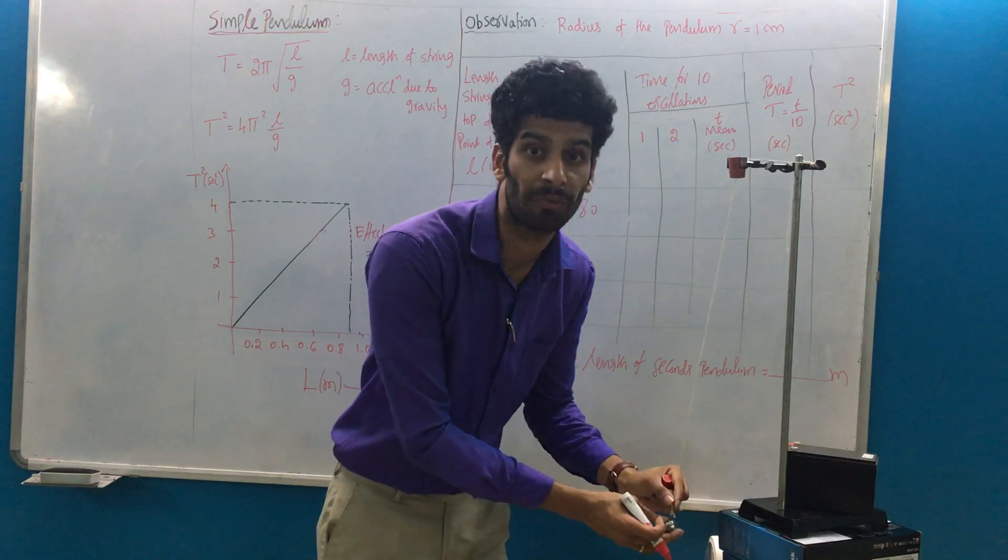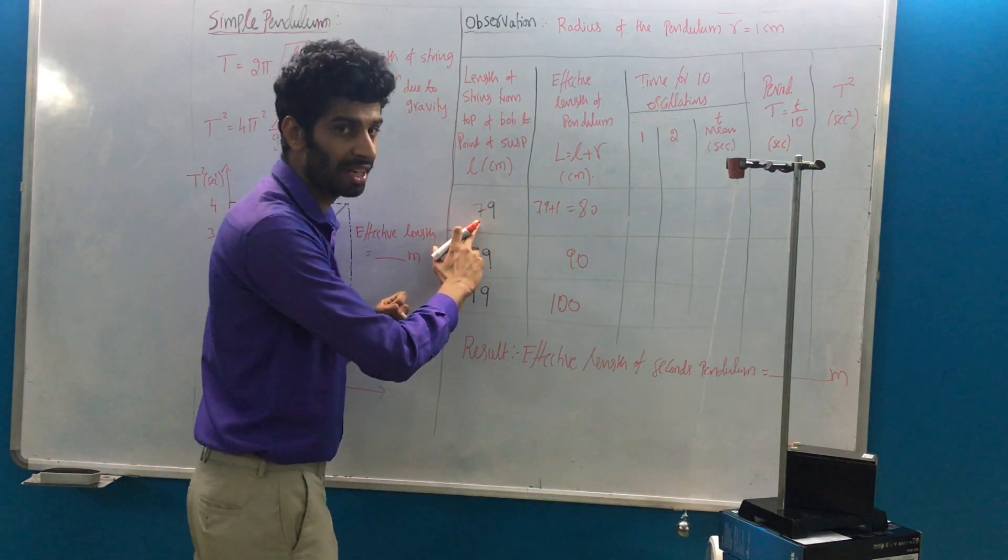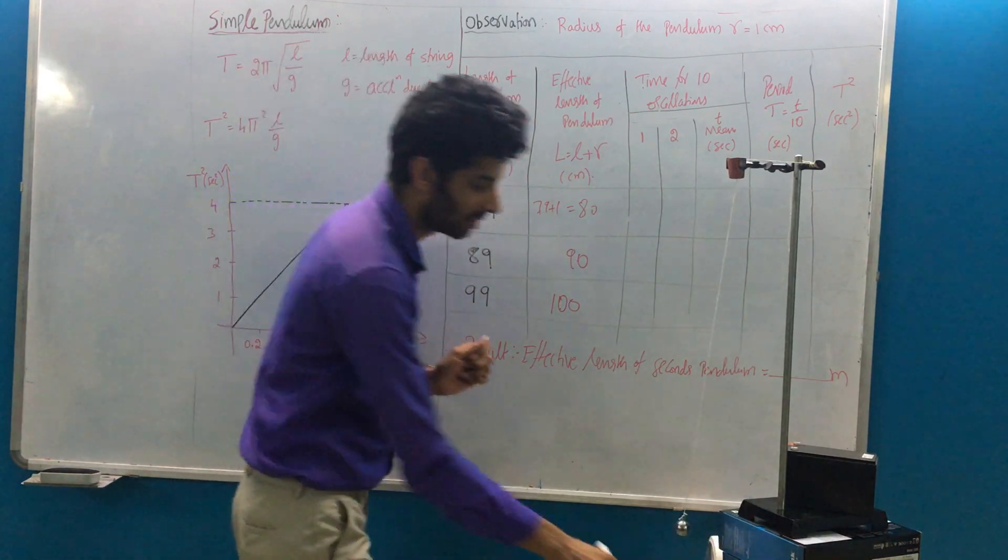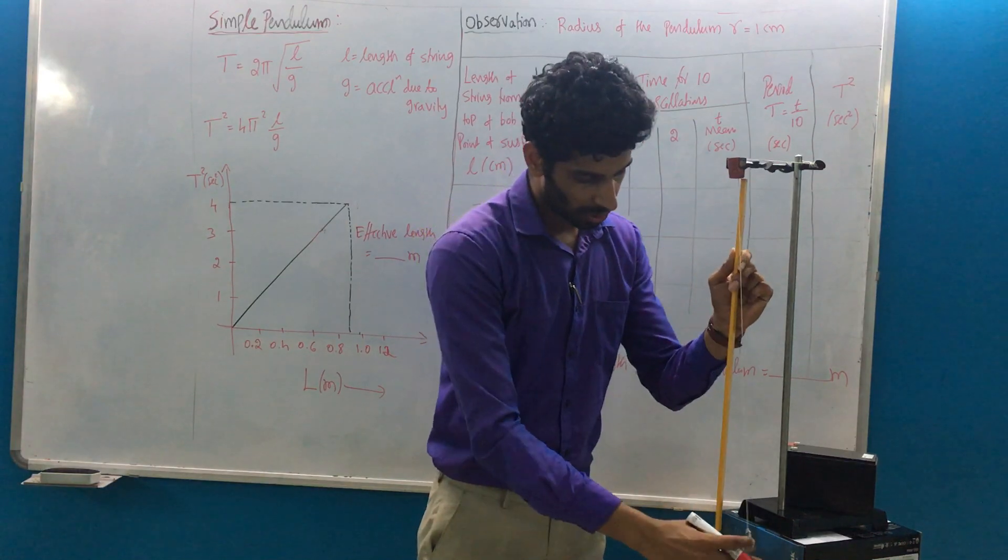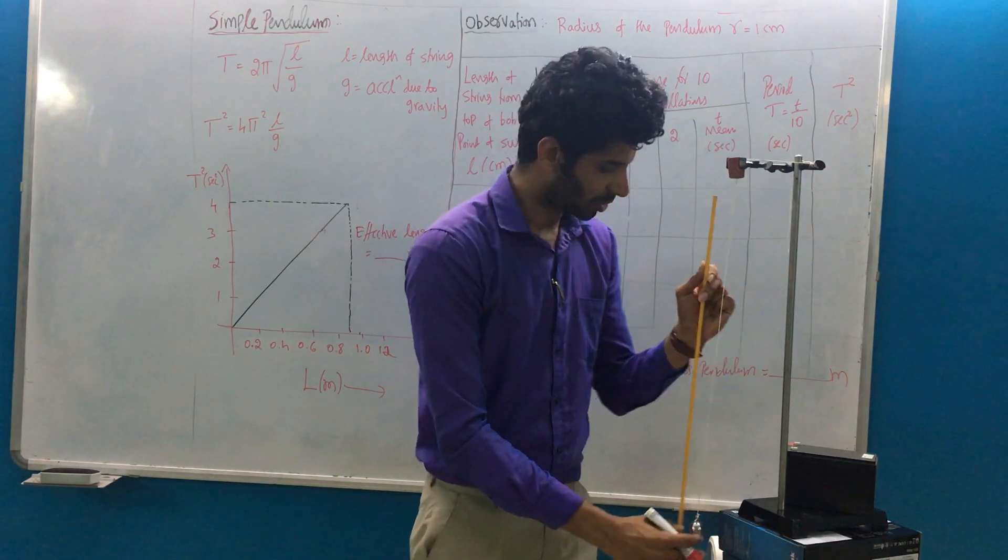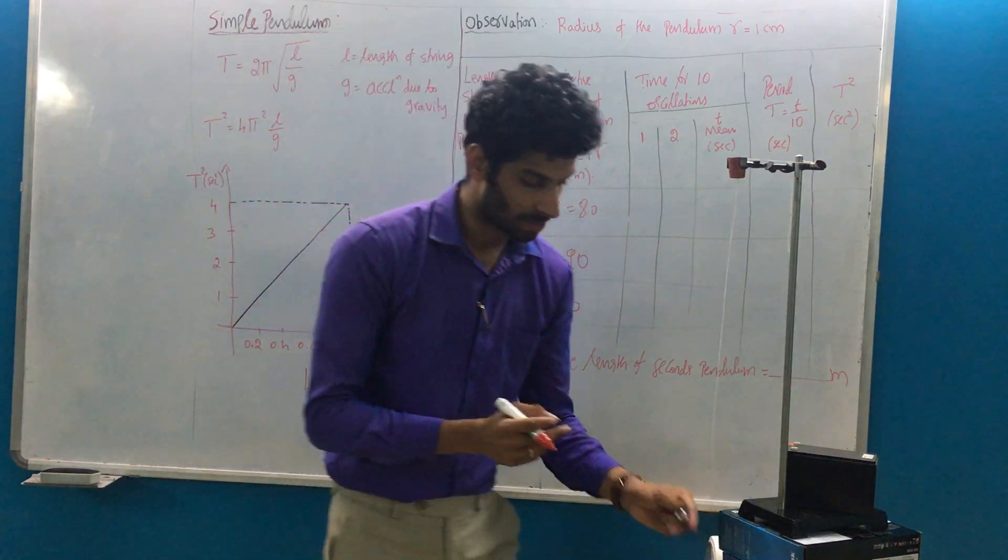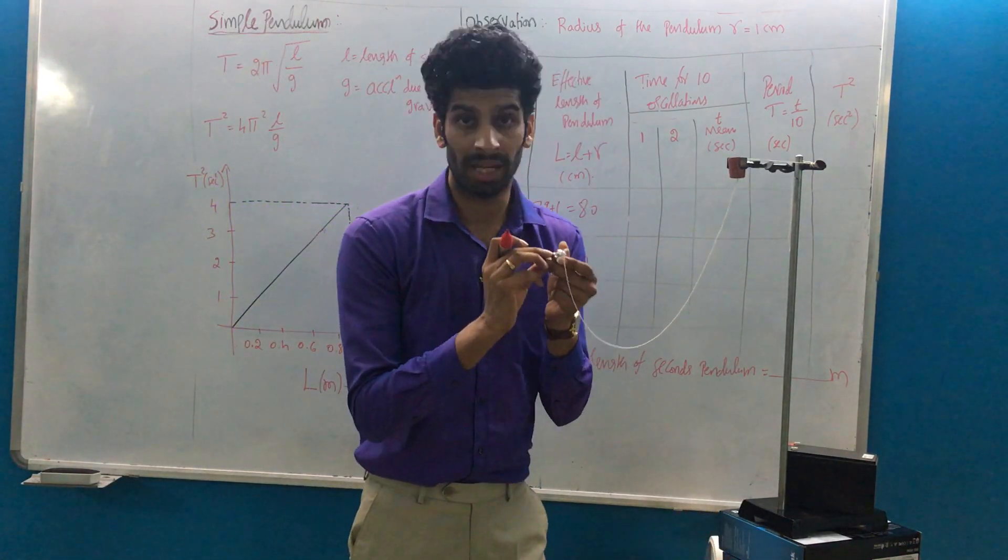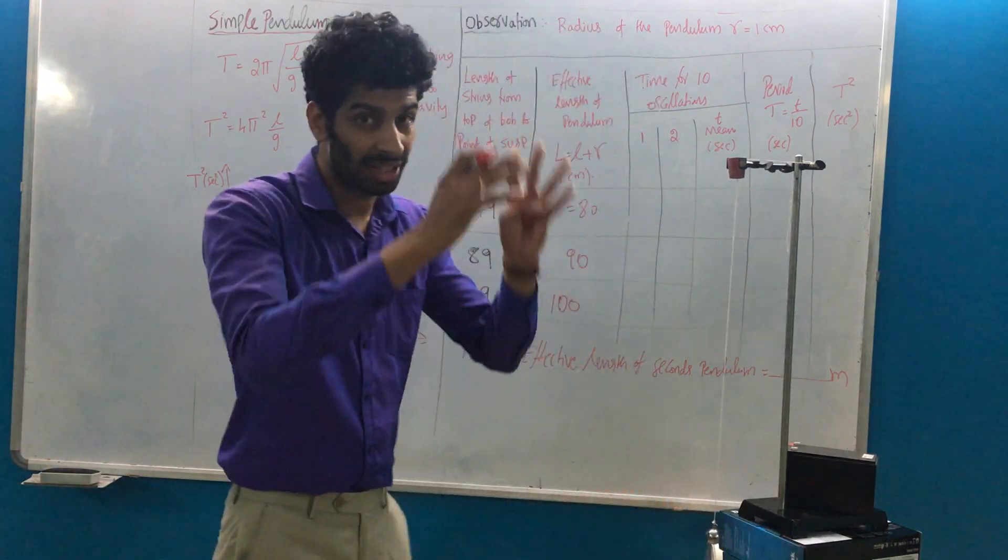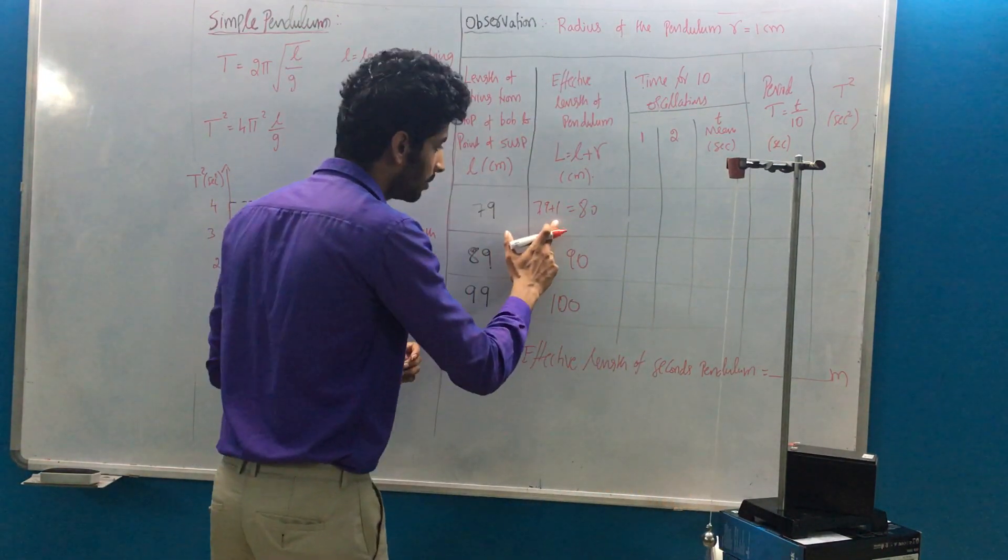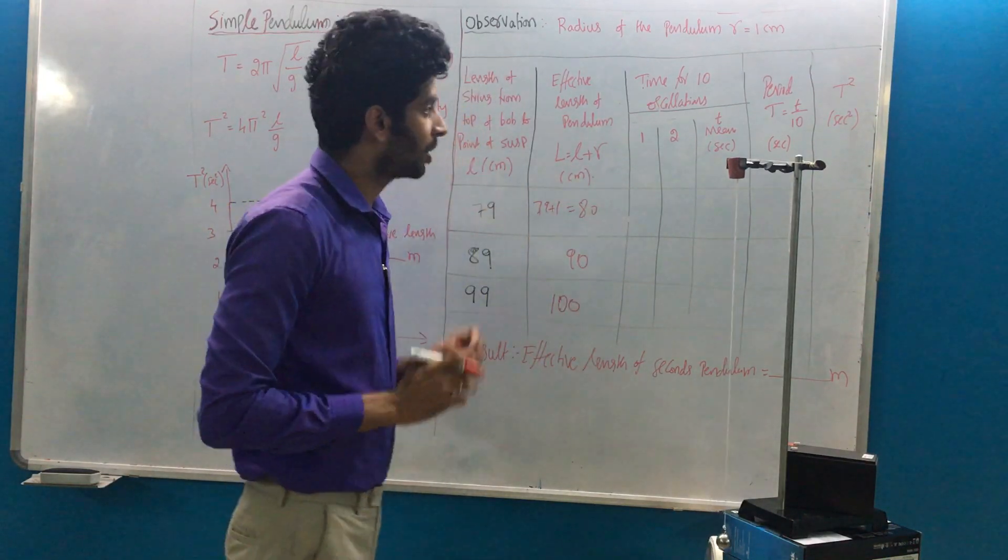For the first trial, it is actually 79 centimeters from the point of suspension to the top of the bob. If you add up the radius, which is 1 cm, to the length of 79 cm, you will get the effective length. So it is 1 cm plus 79 cm, which equals 80 cm.